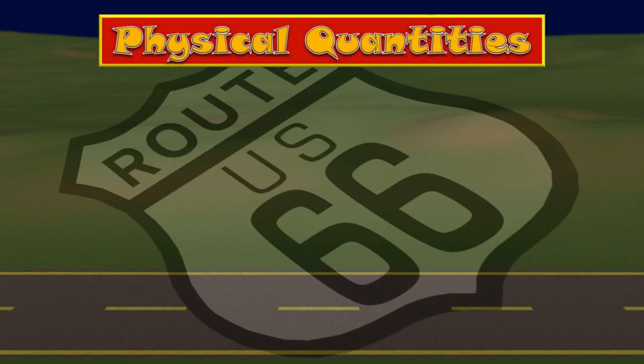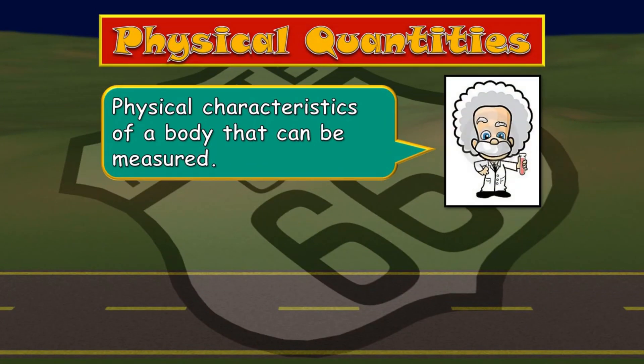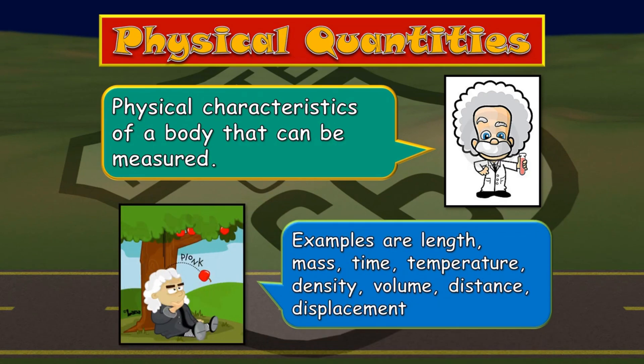When we are talking about physical quantities, we are dealing with the characteristics of a body that can be measured. Commonly, it can be classified into two, just like what we have discussed in the second lesson. We have the fundamental physical quantities and the derived physical quantities. An example of these are length, mass, time, temperature, density, volume, distance, and displacement.